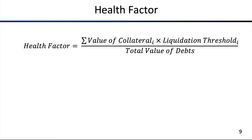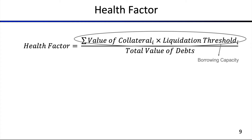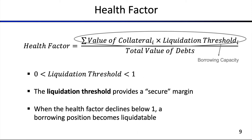The value of the collateral times the liquidation threshold — this discount — is referred to as the borrowing capacity, which is how much you can borrow. The liquidation threshold is between 0.0 and 1 and provides a secure margin — really more of a buffer. You think of how much will this value fluctuate and what is the safe way to avoid liquidation.